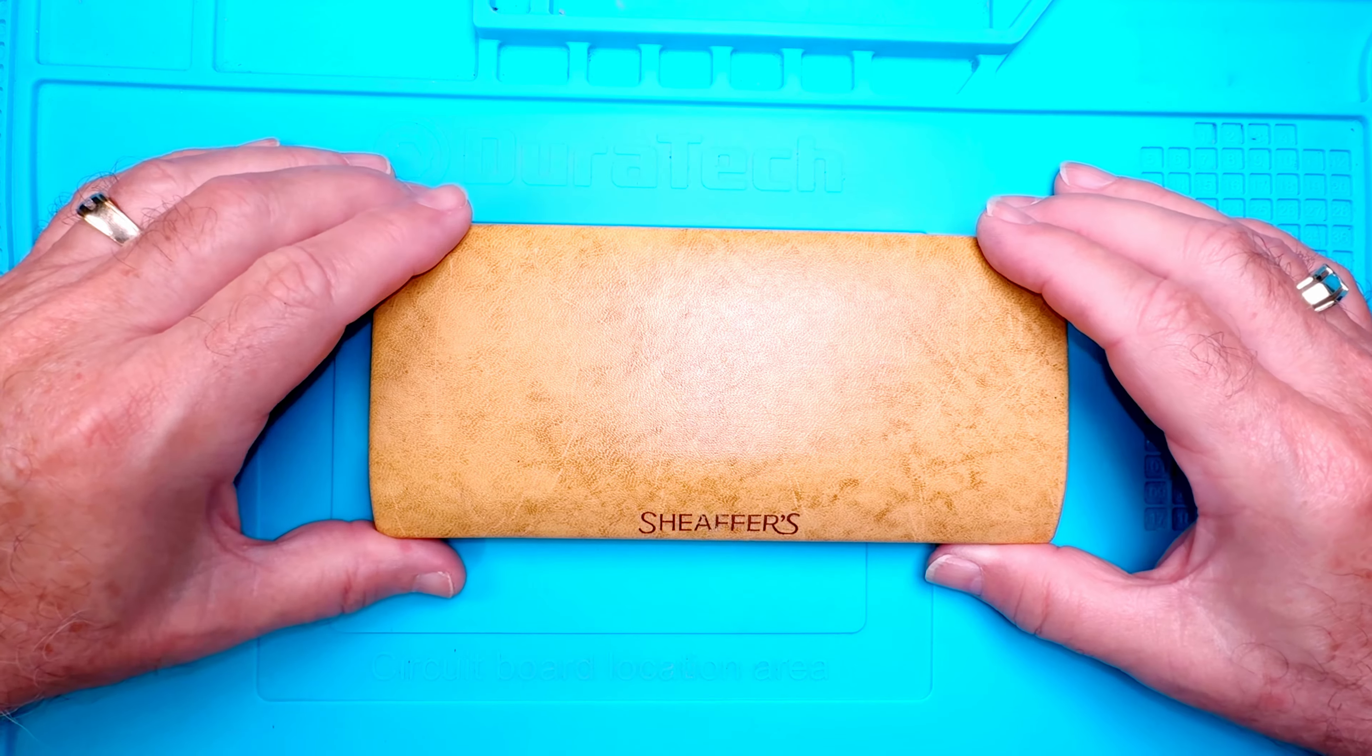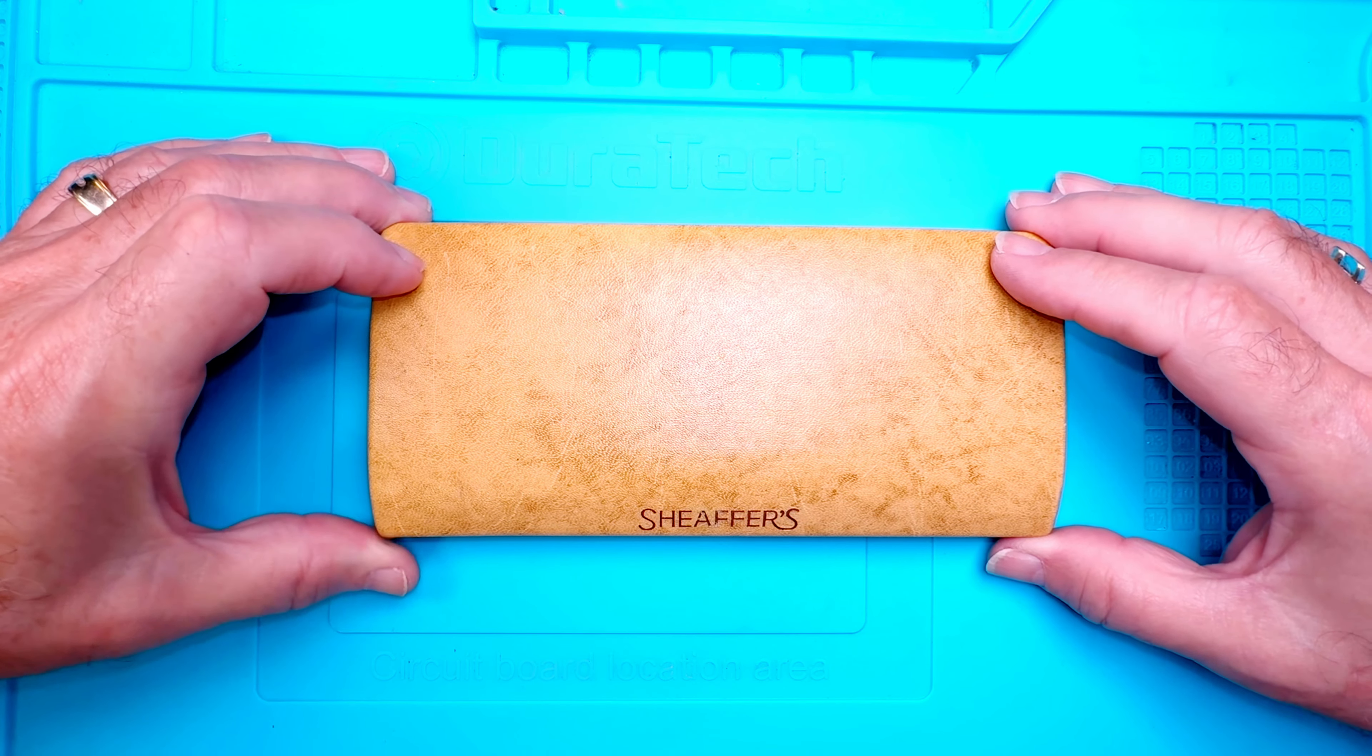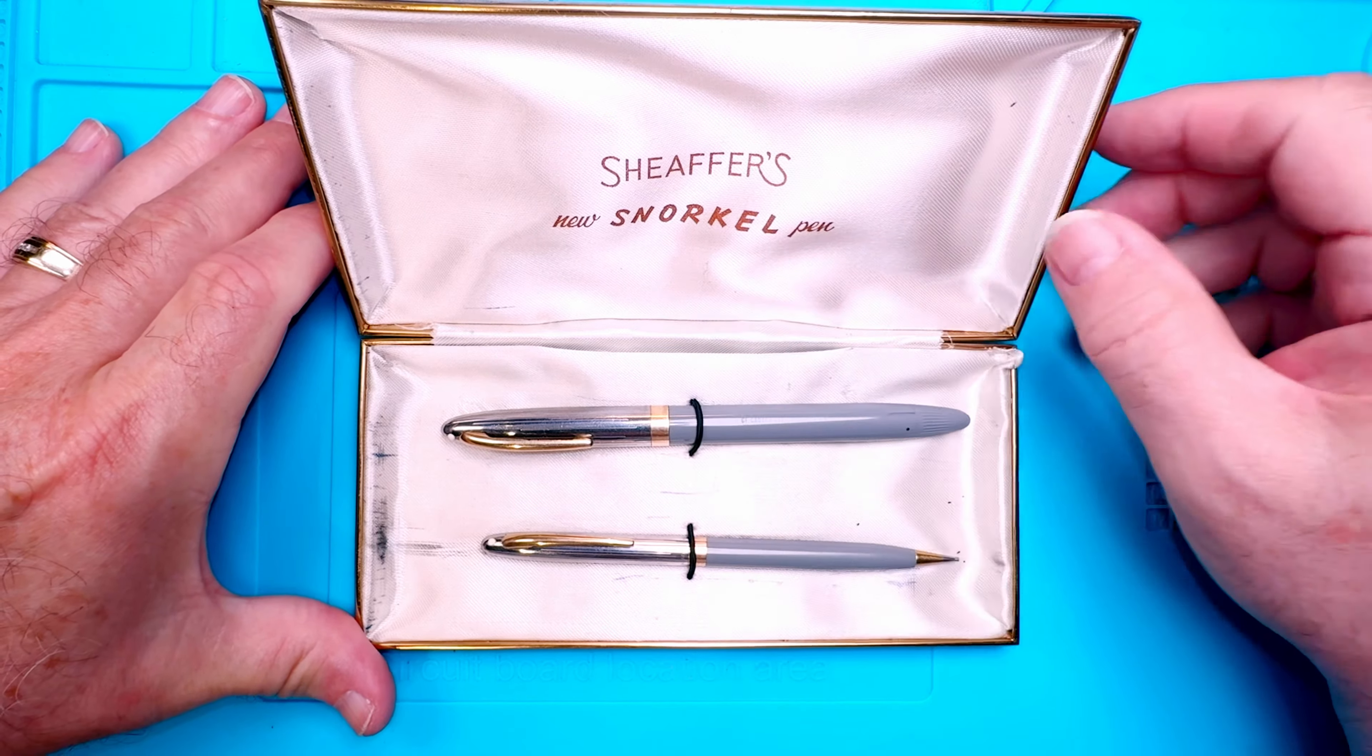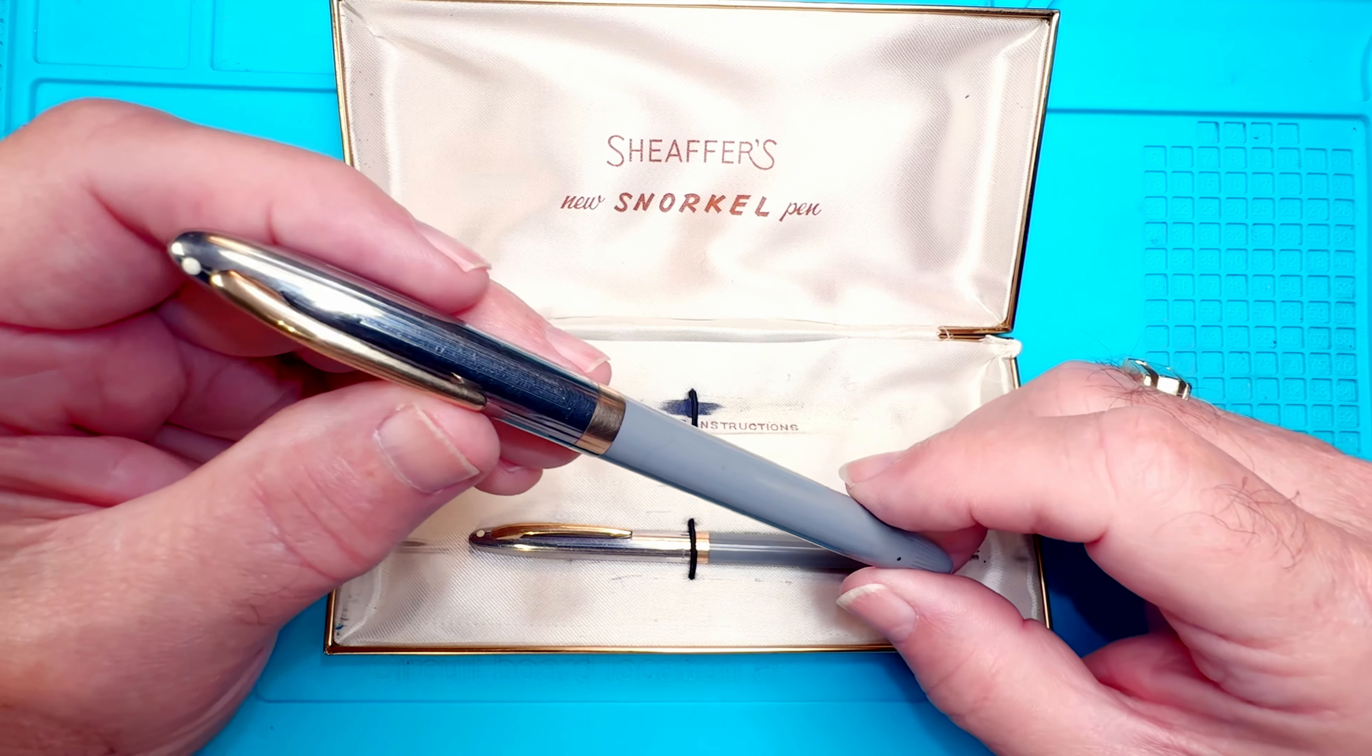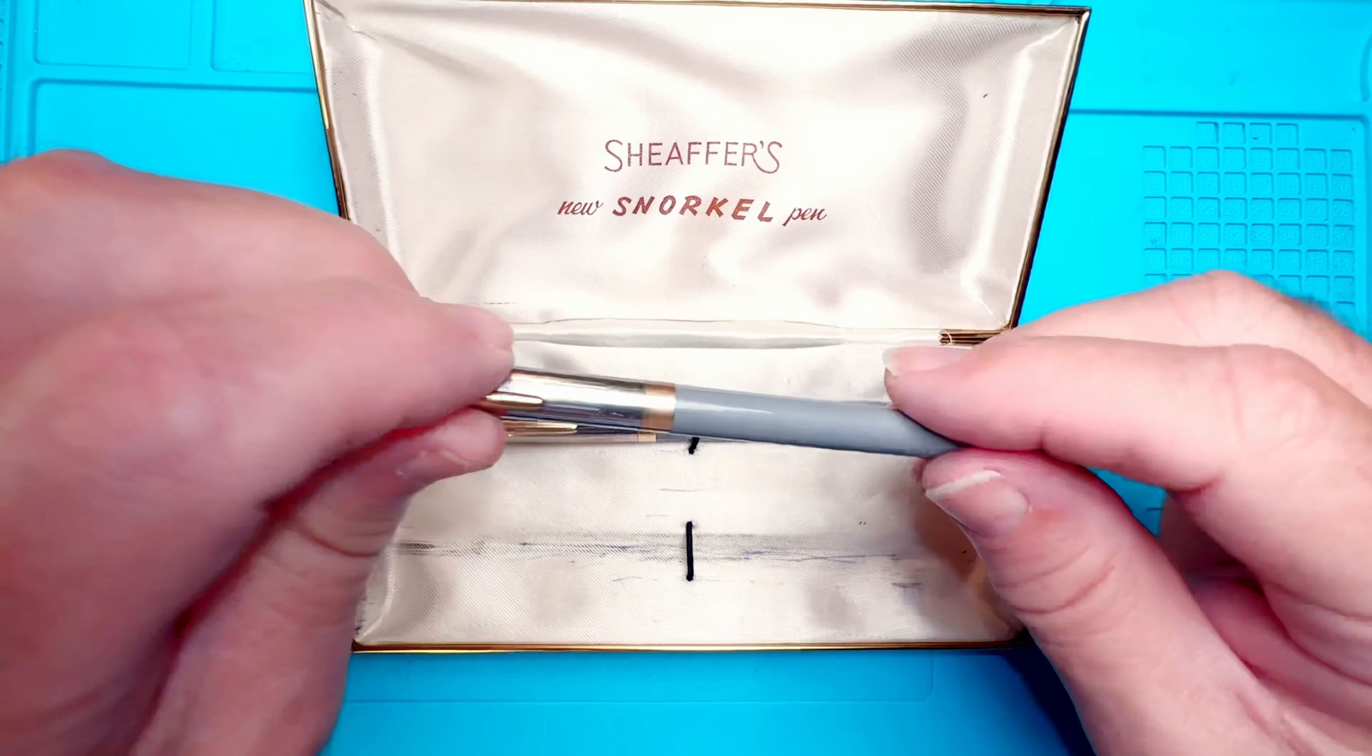So I thought we'd go ahead and triage this pen. This was the piece of resistance from the bag of pens from pen friend Janice. This is a pen and pencil set from Schaefer's, a Schaefer clipper thin model made between 1955 and 1959. It has a gold and chrome cap with the white dot, a gold cap band that says made in Canada on the back, and a gray body, and there's the matching pencil as well.